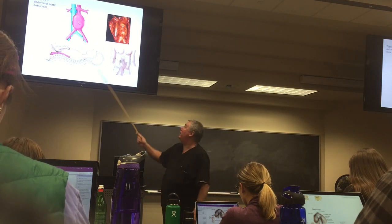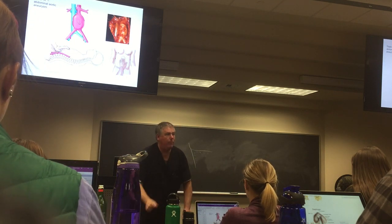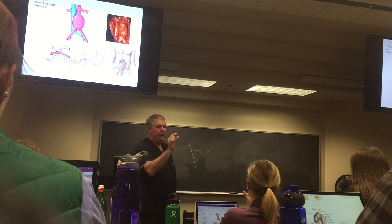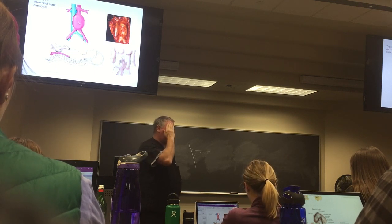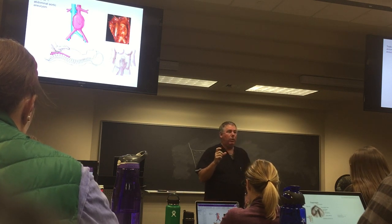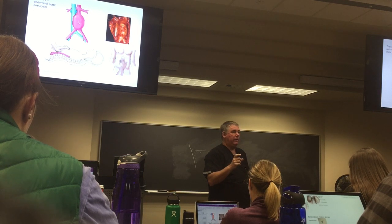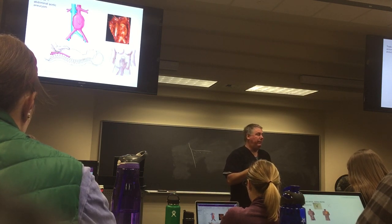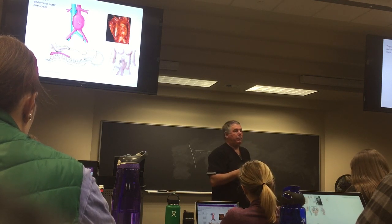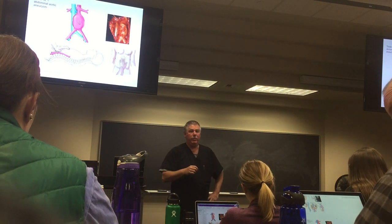This is an aortic aneurysm. Normally the aorta is about two to three centimeters wide in adults. Once it gets above four centimeters it's an aneurysm. Once it gets above six centimeters, you need to do something about it, so you follow it with ultrasounds. This is called a triple A — abdominal aortic aneurysm.